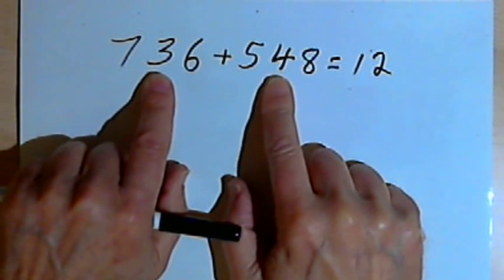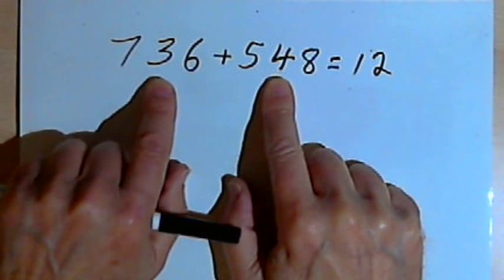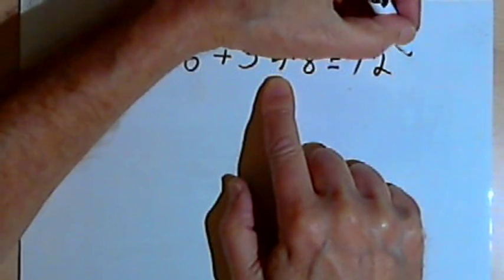So I'm going to take that 3 and 4, which is 7, and add one more to it, the number I'm going to be carrying, and make that an 8.